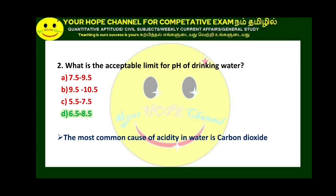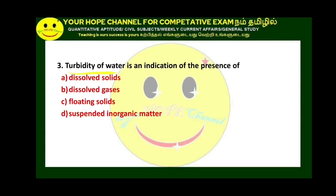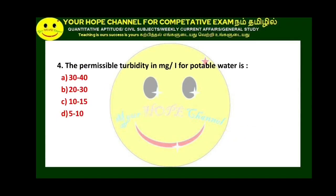Next question: turbidity of water is an indication of the presence of suspended particles. Turbidity means the water is not transparent. Permissible turbidity in mg per litre for potable water — potable water is drinking water.